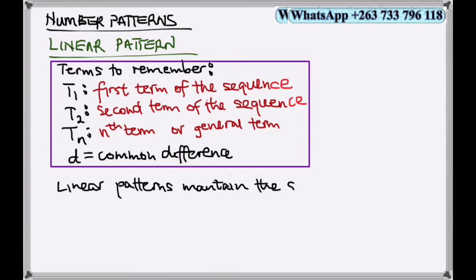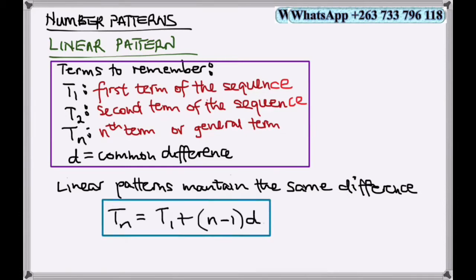Linear patterns maintain the same difference. The general formula for linear patterns is Tn = T1 + (N-1)d, where T1 is the first term.